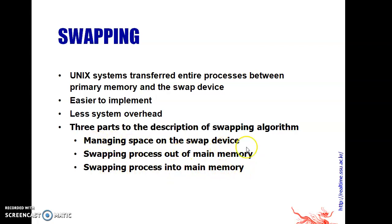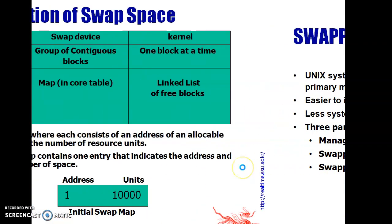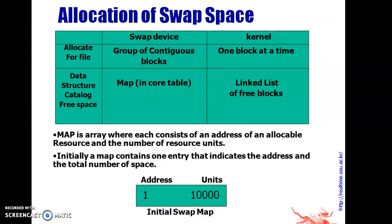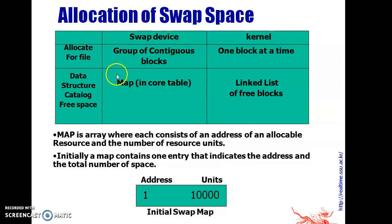First: Managing Space on the Swap Device. Second: Swapping Process out of Memory. Last: Swapping Process into Main Memory. Now we will discuss the Allocation of Swap Space. The Swap Device allocates a group of contiguous blocks for a file, while the Kernel allocates one block at a time. For the Swap Device, the data structure used is a Map, while for the other case it is a linked list.